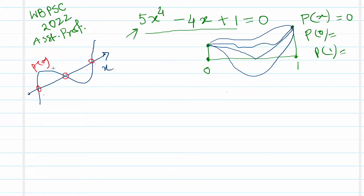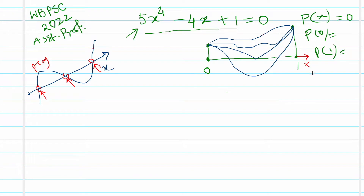If f(x) is zero at certain x-values, those correspond to intersection points of the graph with the x-axis. Our function is just a polynomial — continuous and differentiable — so the graph is smooth. If the graph stays entirely above the x-axis in the interval, there are no zeros there.